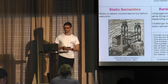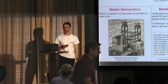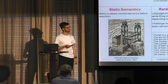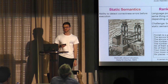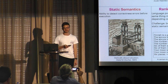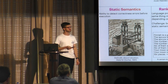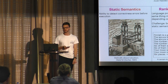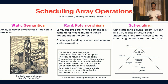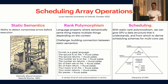My title for the talk is Scheduling Array Operations. I will cover it through three different topics: static semantics, something called rank polymorphism, and finally the scheduling part. These are all related in the sense that the static semantics try to give some correctness guarantees and give some guidance to the later optimization stages.